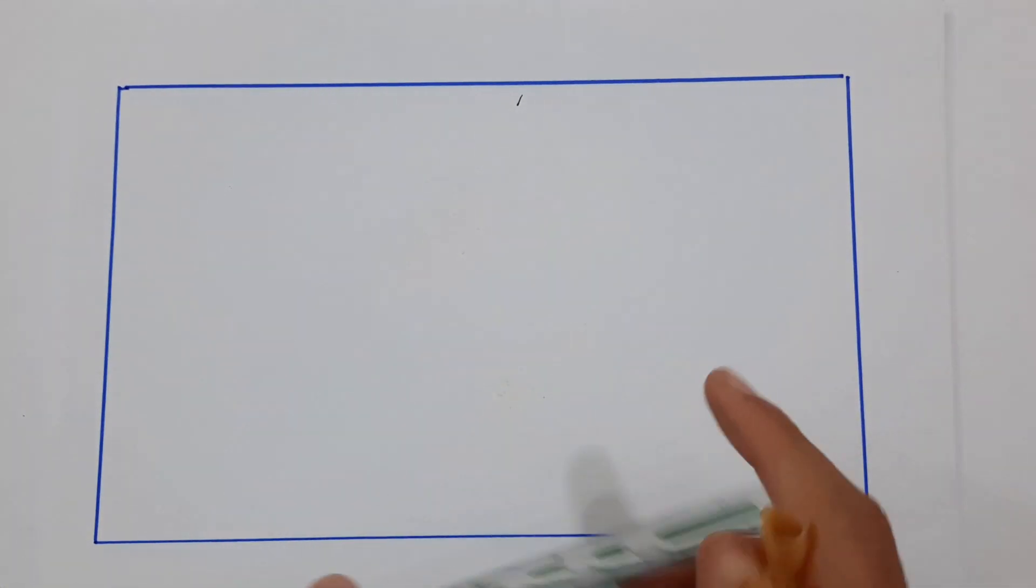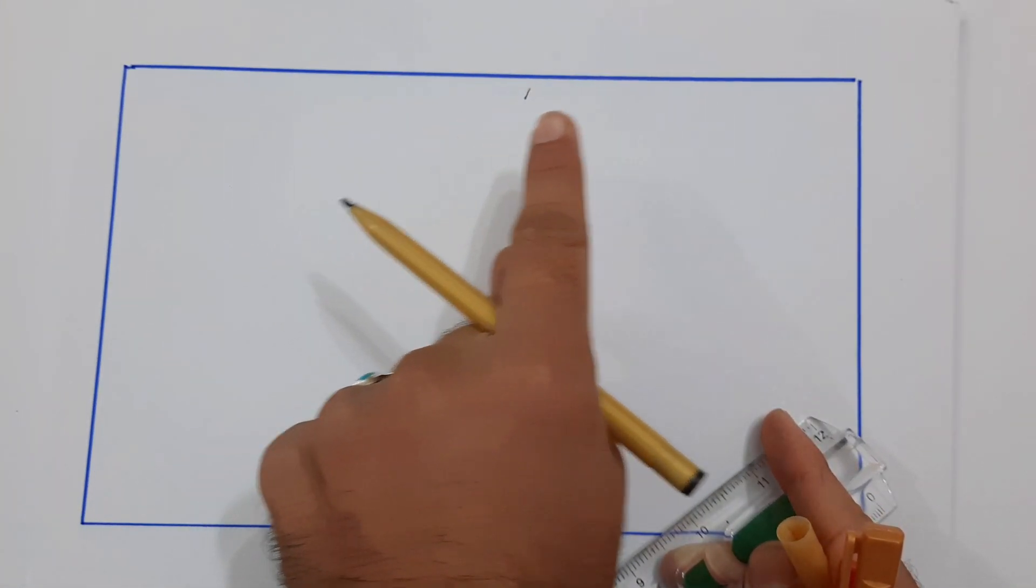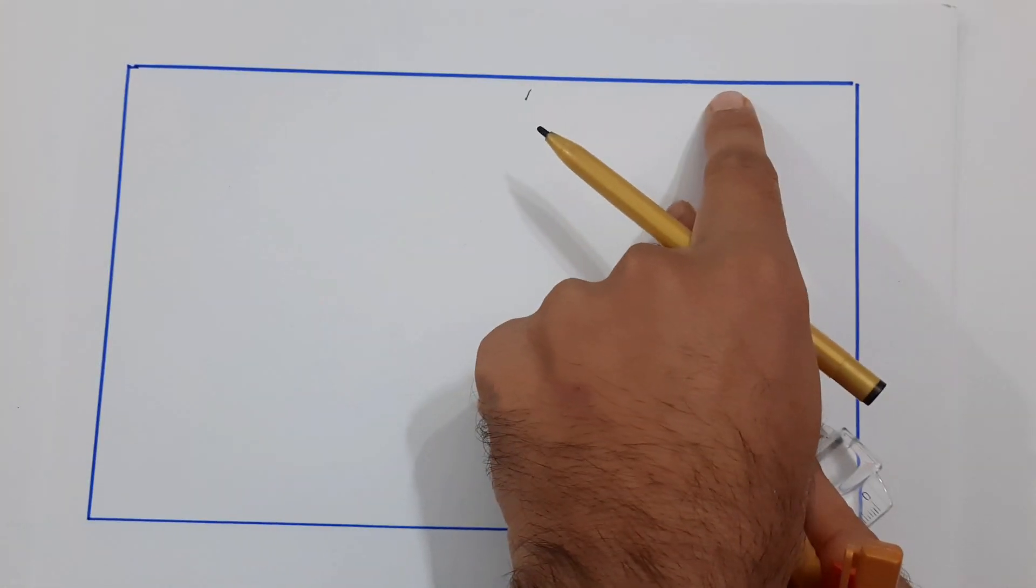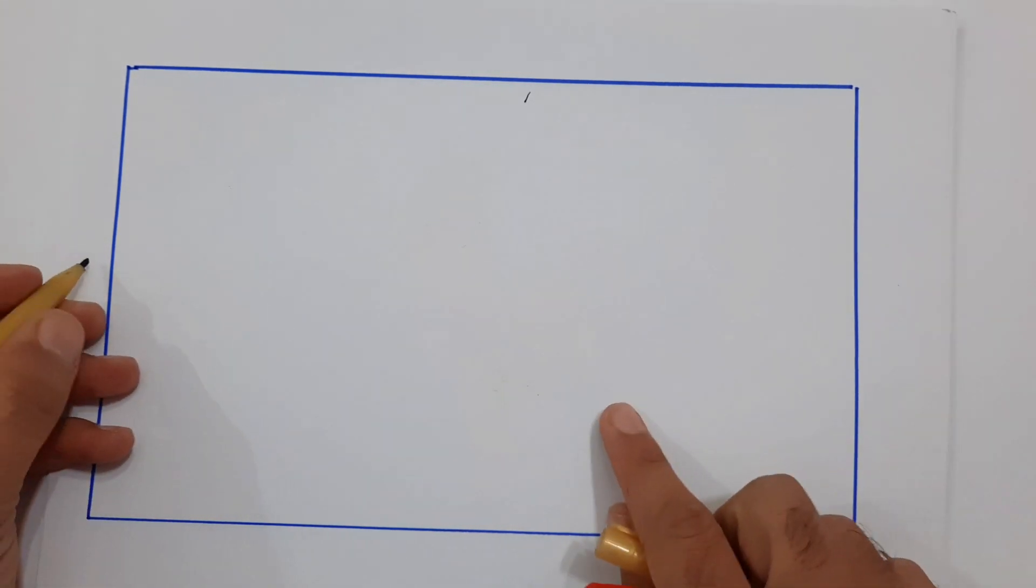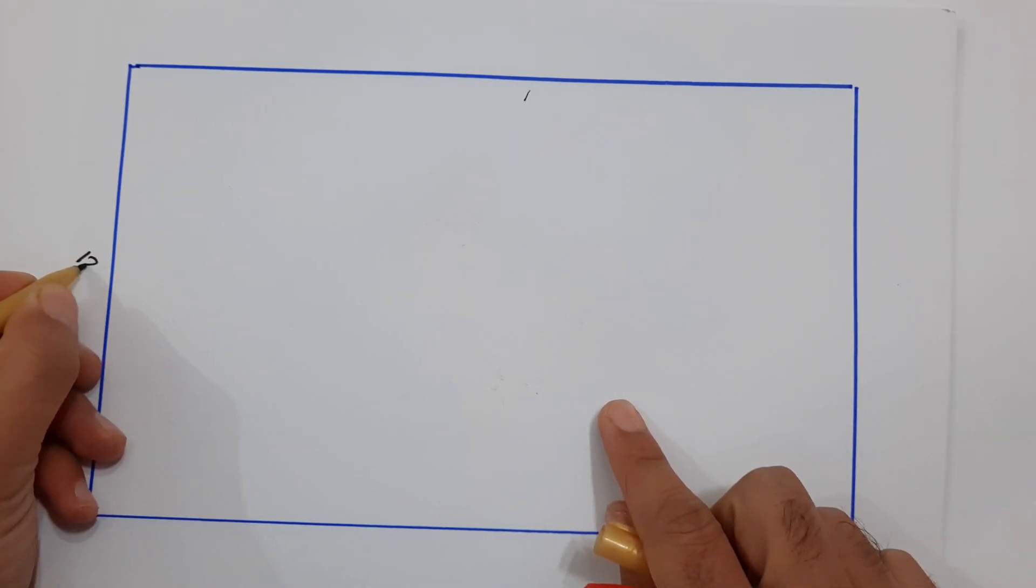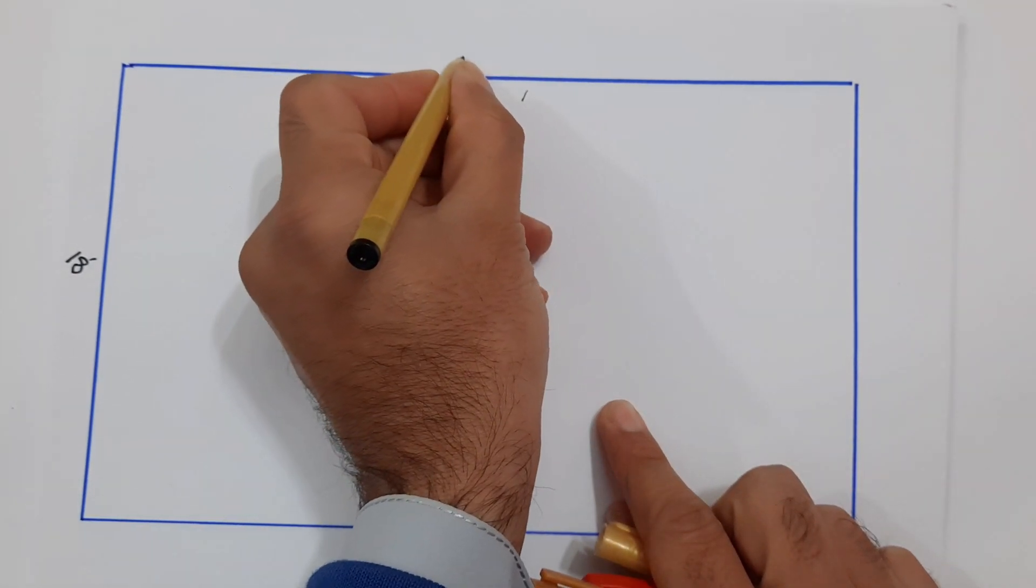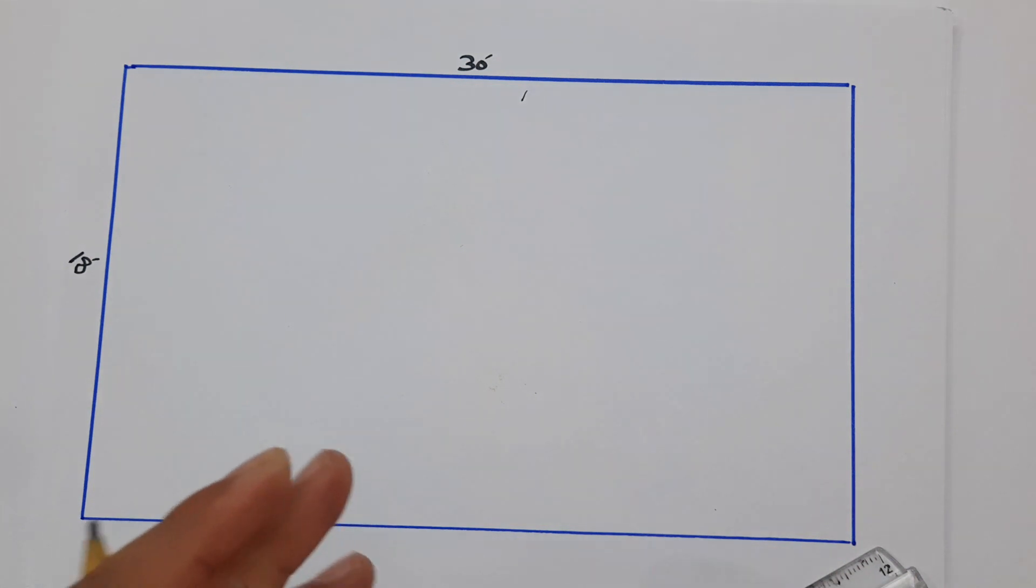Guys, the scale is one inch equals three feet. So this is six inches and this is 10 inches - 18 by 30 feet. This is 18 feet and this side is 30 feet, right.